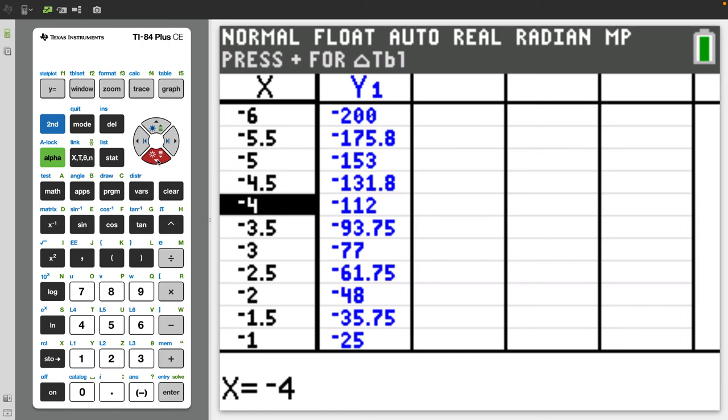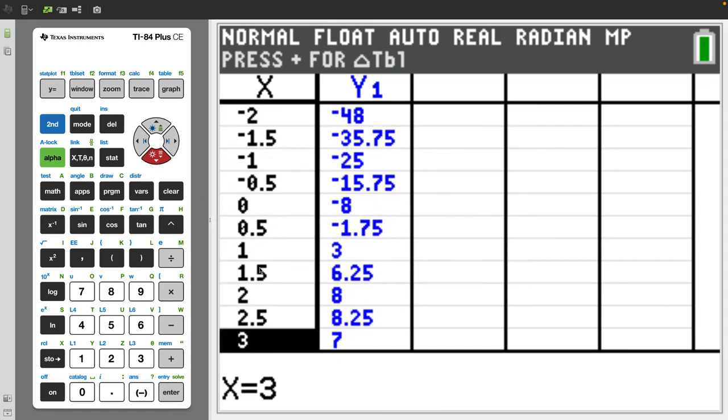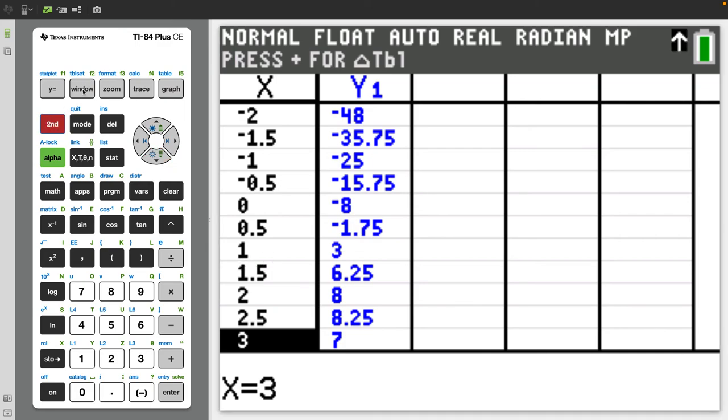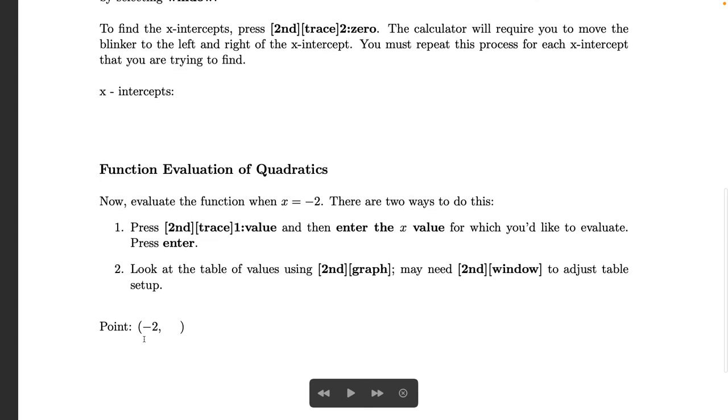But again here you don't have the freedom to select the x values that you want. Maybe you wanted 1.25 here and you don't have the ability to do that. So I personally always find that if I go second window I personally prefer to just have ask under my independent and then I can plug in whatever x values I need for a problem. And that's it. So here you would just put in negative 2 comma 48.